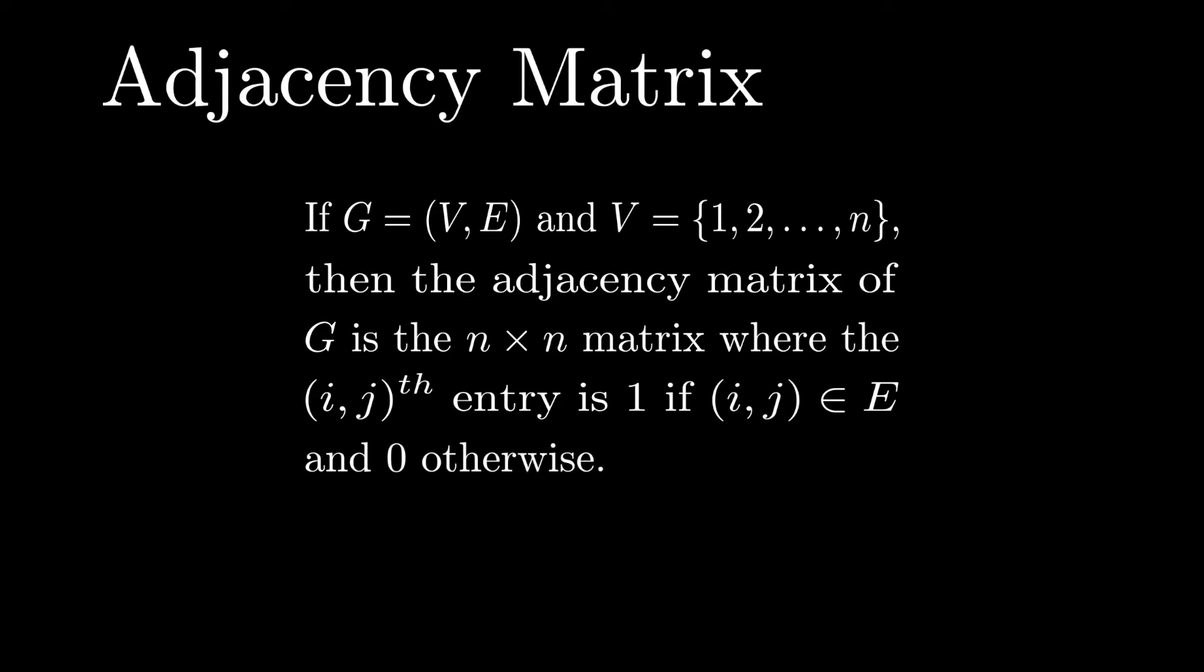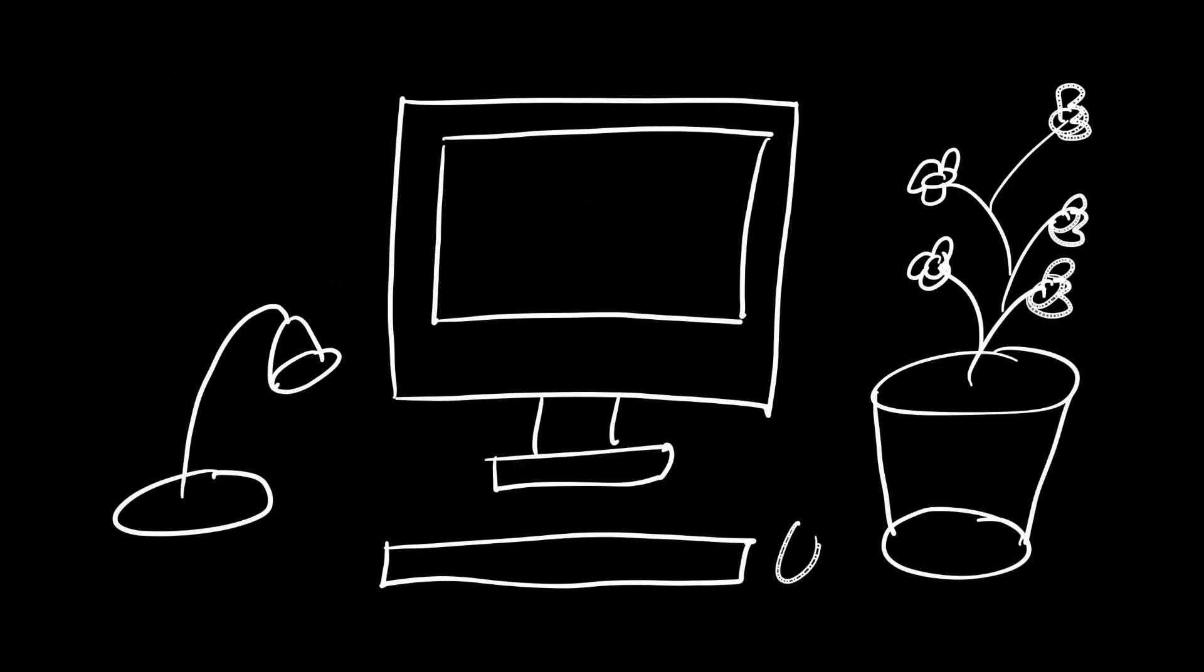Now, the interesting thing about this is that if a graph has a specified vertex labeling, then there is a unique adjacency matrix for that graph. This is specifically going to be helpful when we're trying to put a graph into a computer. All we need to do is input this two dimensional array into the computer and it'll know exactly what we're talking about.